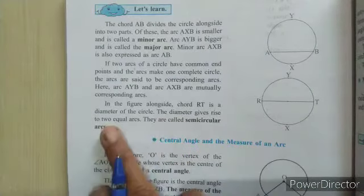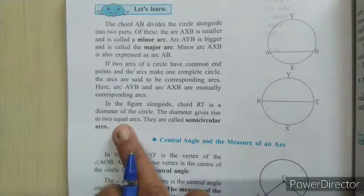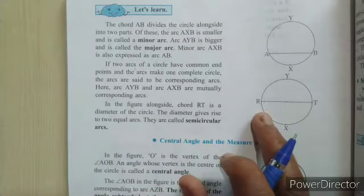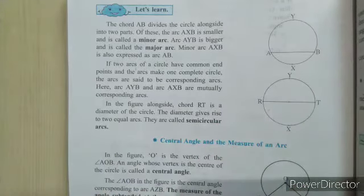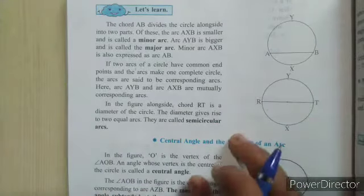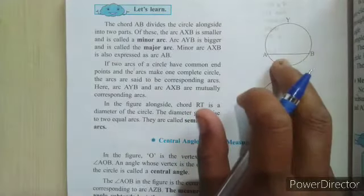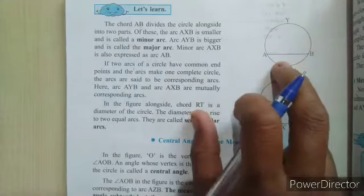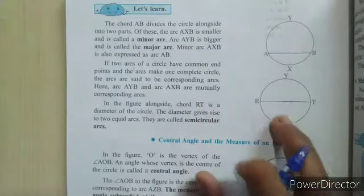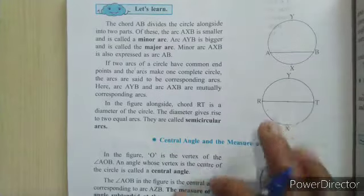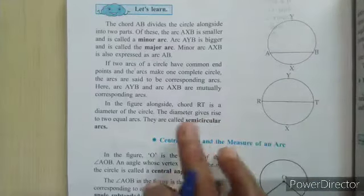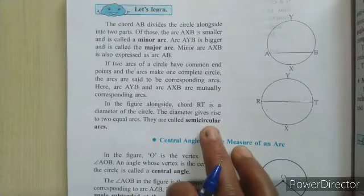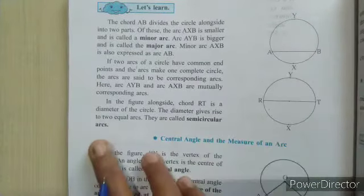The diameter gives rise to two equal arcs. That means the two parts are similar — two equal arcs are formed. These are not minor and major arcs; these two similar arcs are called semi-circular arcs.